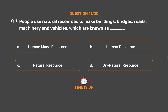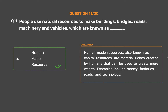The correct answer is Option A: Human-made resource. Human-made resources, also known as capital resources, are material riches created by humans that can be used to create more wealth. Examples include money, factories, roads, and technology.